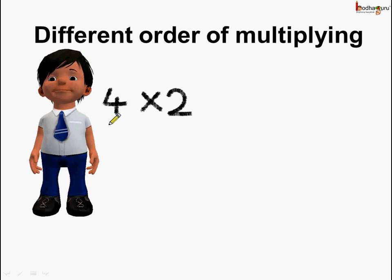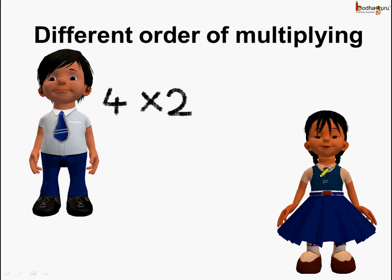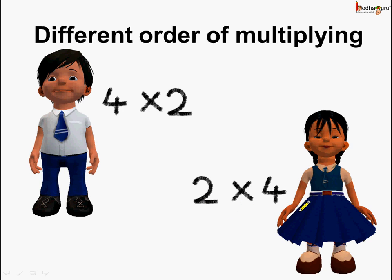Aman said there are 4 groups and in each group 2 horses, so he did 4 multiplied by 2. And this is Khushi. She said 2 horses in each group and there are 4 such groups, so she did 2 multiplied by 4. They followed a different order of multiplication but the answer was the same.